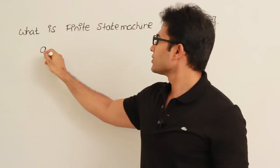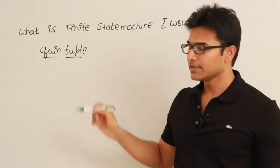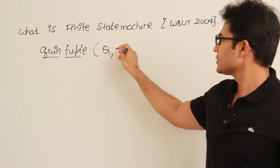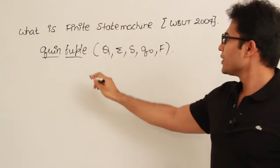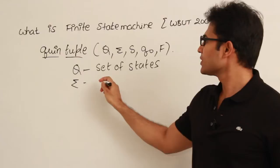The quintuple — 'quintuple' means a tuple containing five elements, which is a kind of ordered pair. The quintuple is written as Q, sigma, delta, Q-naught, and F.